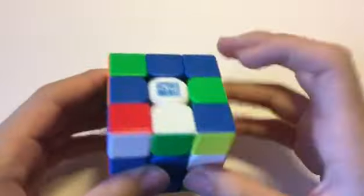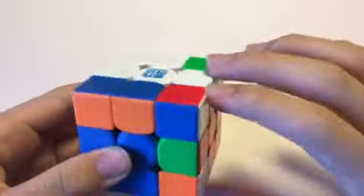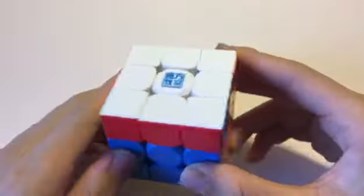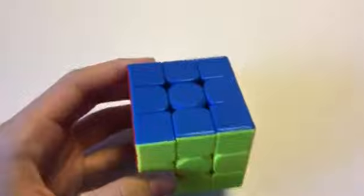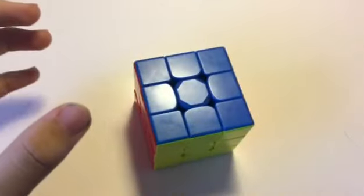And then we cancel into these two. Like so. And notice this fourth pair is beginning to form over here. And notice that we are going to get a very, very lucky UL skip. And finally, we just have a J perm, which Jode executed perfectly. And that ended up being a 3.88.